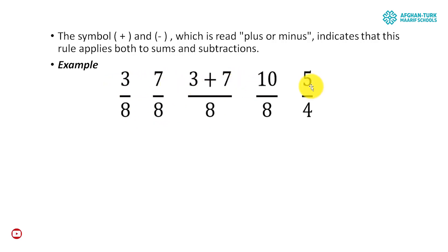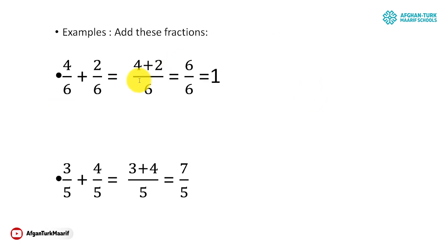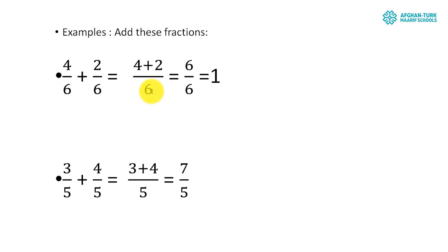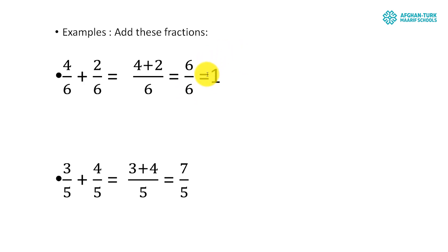For this example, as you can see, we have 4 over 6 plus 2 over 6. The denominators are equal, so we don't need anything more — we just take one of the denominators and add the numerators together. So the 6 stays, and 4 plus 2 gives us 6 over 6, which is the answer. And you know that 6 over 6 equals 1 — one whole thing.